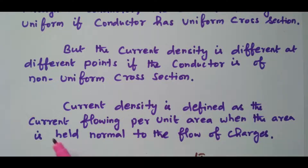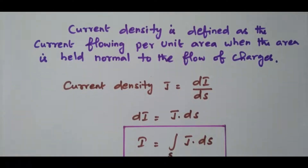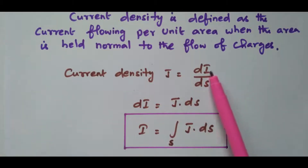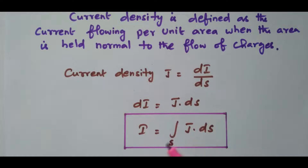Current density is defined as the current flowing per unit area, when the area is held normal to the flow of charges. So, current density J equal to dI divided by dS. Cross-multiplying, dI equal to J into dS. By integrating on both sides, we get I equal to the surface integral of J dot dS. So the current expressed in terms of current density is I equal to the surface integral J dot dS.